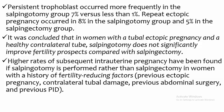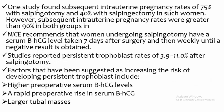Resistant trophoblast occurred more frequently in the salpingotomy group (7% versus less than 1%), and repeat ectopic pregnancy occurred in 8% in the salpingotomy group versus 5% in the salpingectomy group. A higher rate of subsequent intra-uterine pregnancy has been found if salpingotomy is performed rather than salpingectomy in women with a history of fertility-reducing factors, previous ectopic pregnancy, contralateral tube damage, previous abdominal surgery, and previous PID. One study found subsequent intra-uterine pregnancy rates of 75% with salpingotomy and 40% with salpingectomy in such women. NICE recommend that women undergoing salpingotomy have a serum beta-hCG taken 7 days after surgery and then weekly until a negative result is obtained. Studies report a persistent trophoblast rate of 3.9% to 11% after salpingotomy.